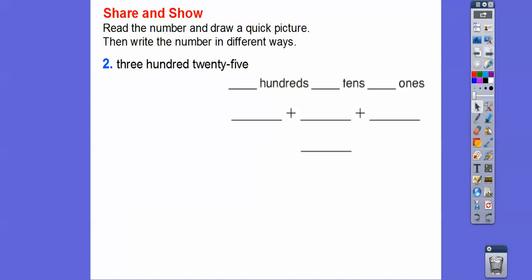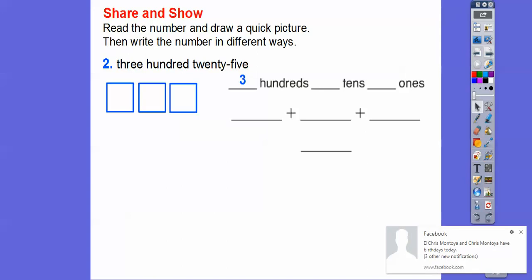325. So watch what I'm going to do. I'm going to put 3 right there for the hundreds and do 3 squares. There's 300 right there. And then 25. So I'm going to do the 2 and the 5 right there. So there's my 20 and then 5 right there.